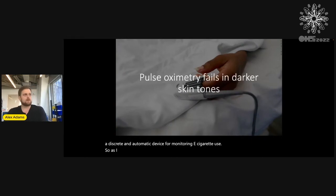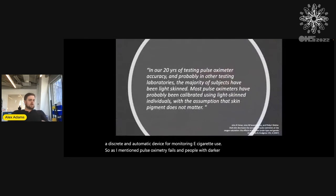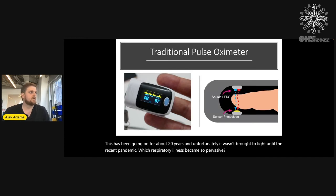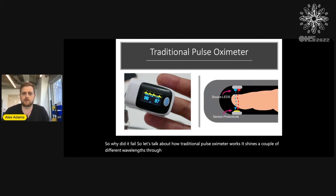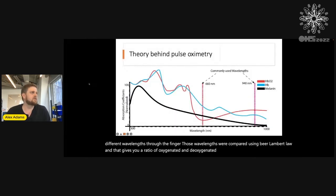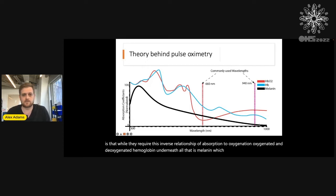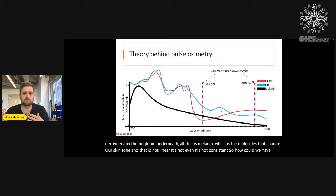Pulse oximetry fails in people with darker skin tones. This has been going on for about 20 years, and unfortunately it wasn't brought to light until the recent pandemic, when respiratory illness became so pervasive. Traditional pulse oximeters shine a couple of different wavelengths through the finger, compare those wavelengths using Beer-Lambert law, and give you a ratio of oxygenated and deoxygenated hemoglobin. But underneath all that is melanin — the molecules that change our skin tone — and that absorption is not linear and not consistent. So how can we have a consistent measurement if we don't account for skin tone?